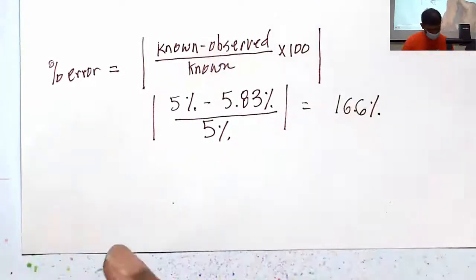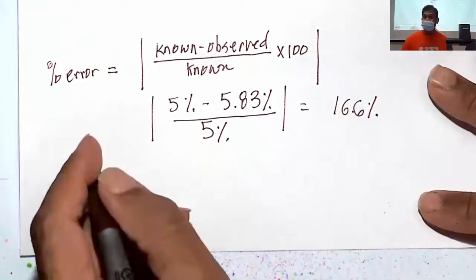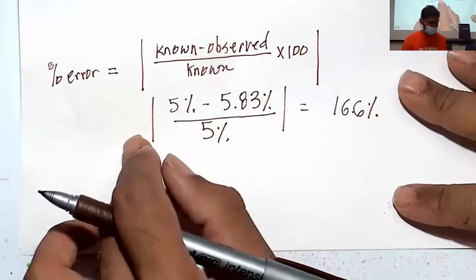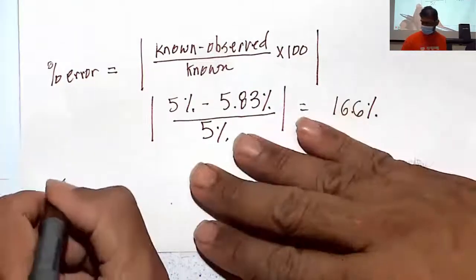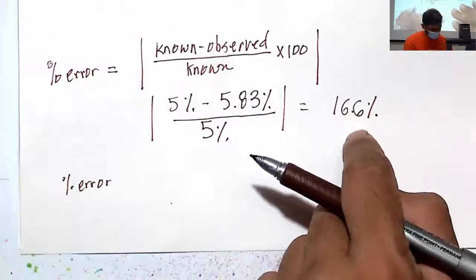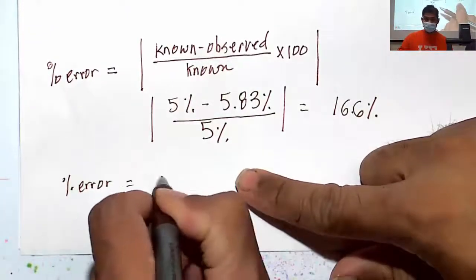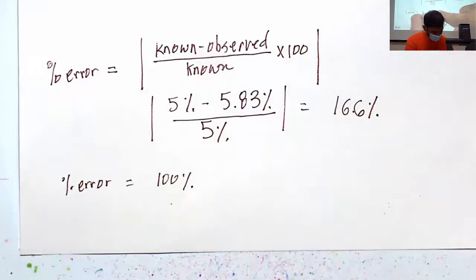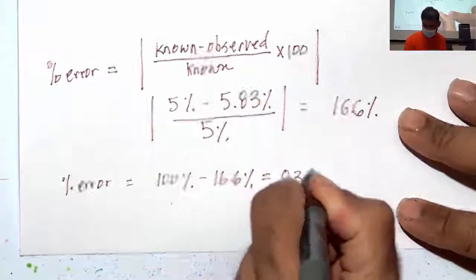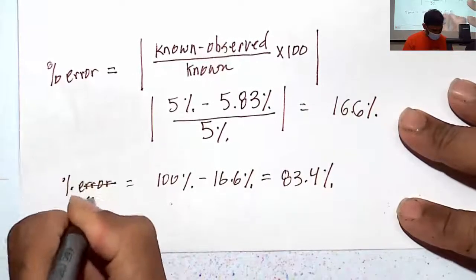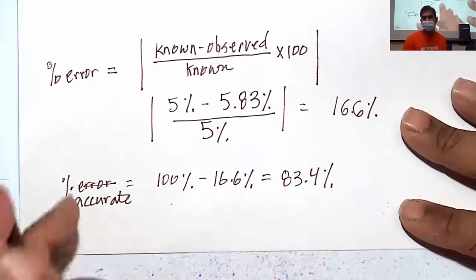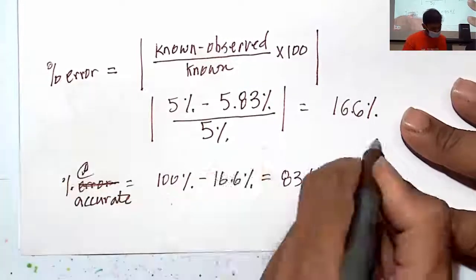Our data gave 5.83% experimentally versus the manufacturer's 5%. To find percent accuracy, we take 100% minus the percent error: 100% − 16.6% = 83.4%. So we were 83.4% accurate in our calculation of the mass percentage of acetic acid in the vinegar.